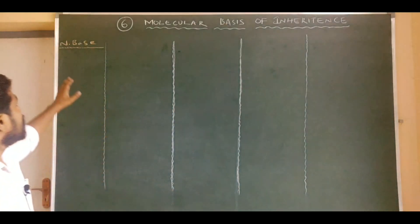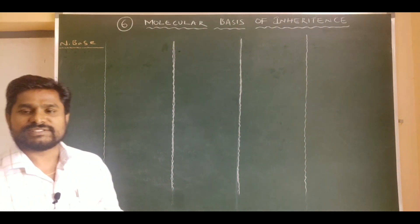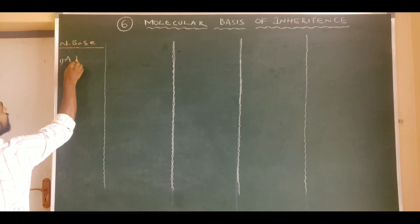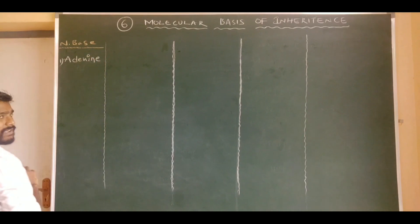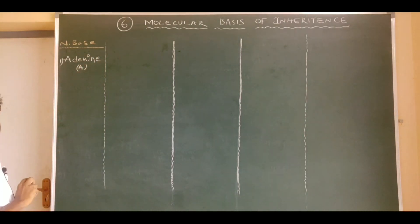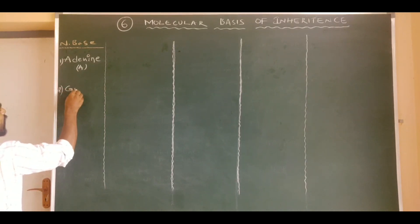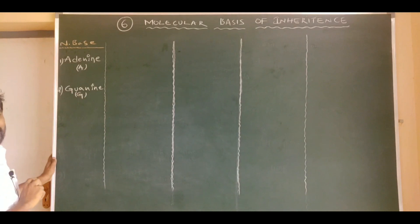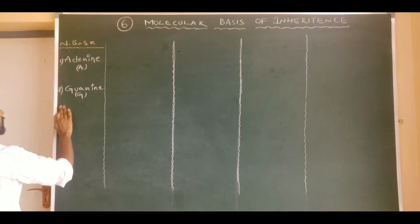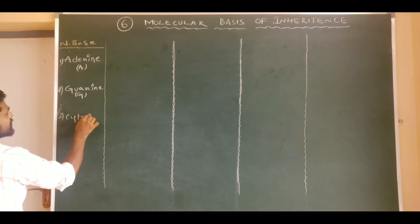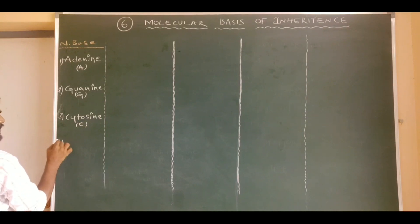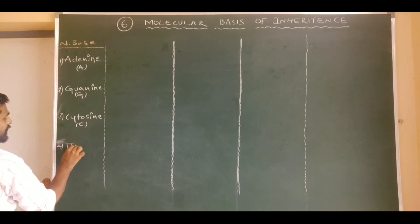First, let us start with nitrogen bases. There are four types of nitrogen bases in the nucleic acids, especially DNA. Those are: one is adenine, assigned with the letter A; the second one is guanine, assigned with the letter G. You know very well that these two are purines. The third one is cytosine, assigned with the letter C, and the fourth one is thymine, assigned by the letter T.